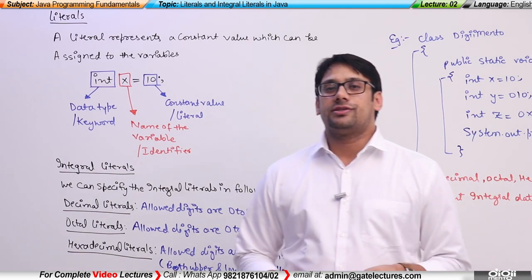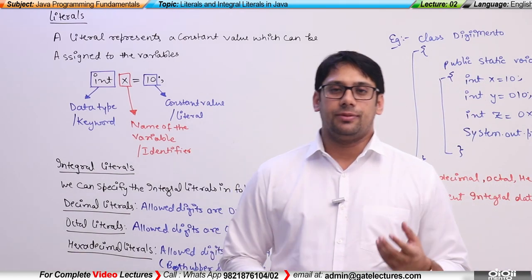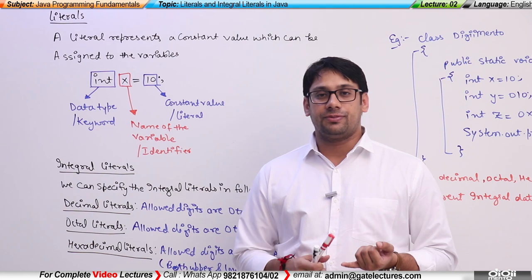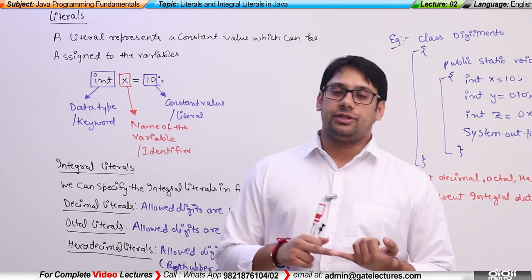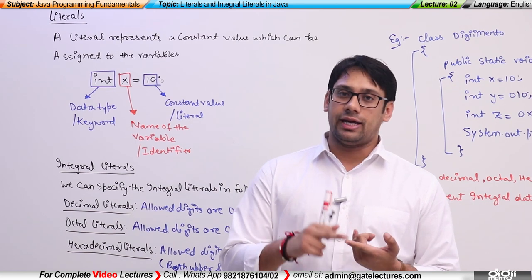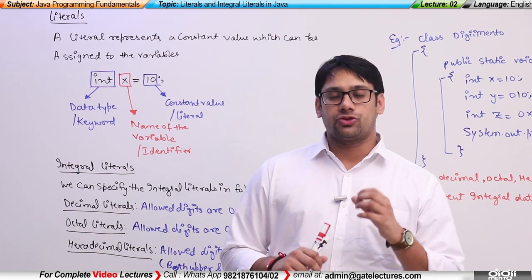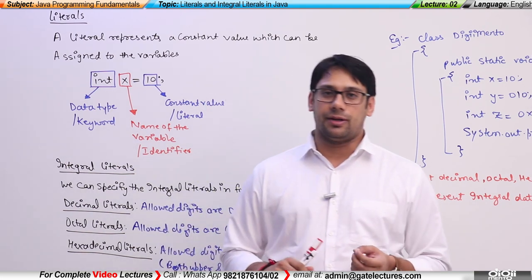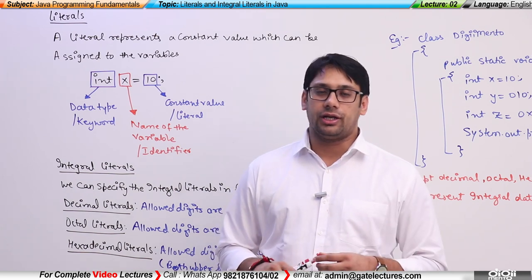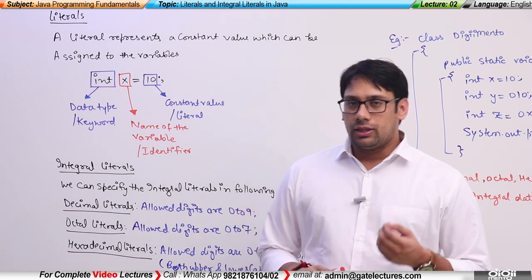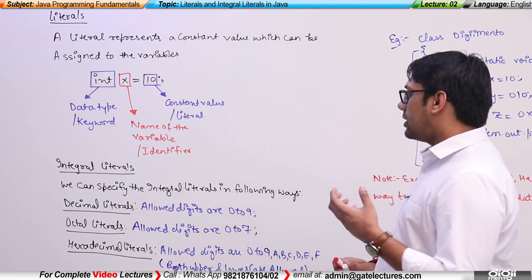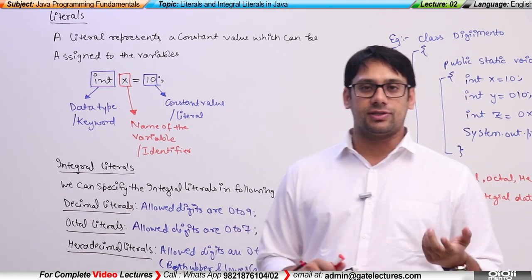In the previous video we had a discussion regarding the data types present in Java programming language. We discussed data types of integer types — byte, short, integer, and long — and floating types — float and double. In this video we will discuss literals and the limitations of the data types where these literals are stored.